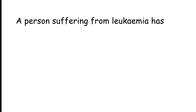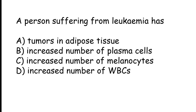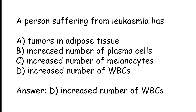A person suffering from leukemia has: Tumors in adipose tissue, Increased number of plasma cells, Increased number of melanocytes, or Increased number of WBCs. The correct answer is Option D. A person suffering from leukemia has an increased number of WBCs.